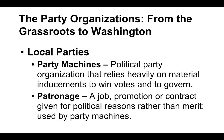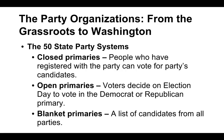What are the state party systems? A closed primary is how we determine who runs for office. In a closed primary, only people who have registered with the party can vote for that party's candidates. So on primary day, if you're a Democrat, you vote in the Democratic Party primary. You cannot vote in the Republican primary and vice versa.